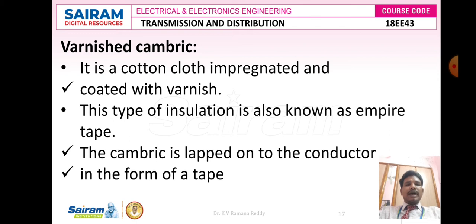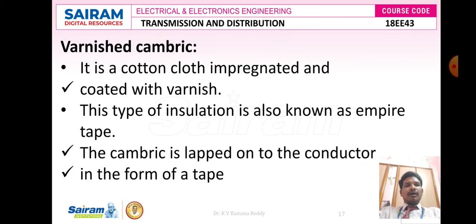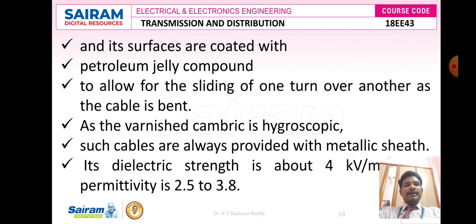The next insulating material is varnish cambric, which is simply a cotton cloth impregnated and coated with varnish. This type of insulation is also known as empire tape. The cambric is lapped onto the conductor in the form of a tape, and its surfaces are coated with petroleum jelly compound to allow sliding of one turn over another as the cable is bent. Like impregnated paper, varnish cambric is also hygroscopic, so these cables are always provided with a metallic sheath. The dielectric strength for varnish cambric is about 4 kV/mm and its relative permittivity εr is 2.5 to 3.8.